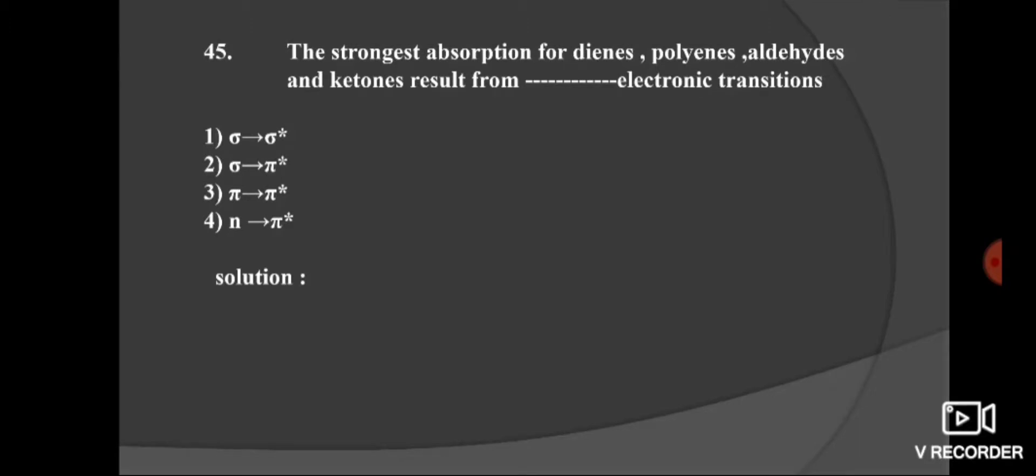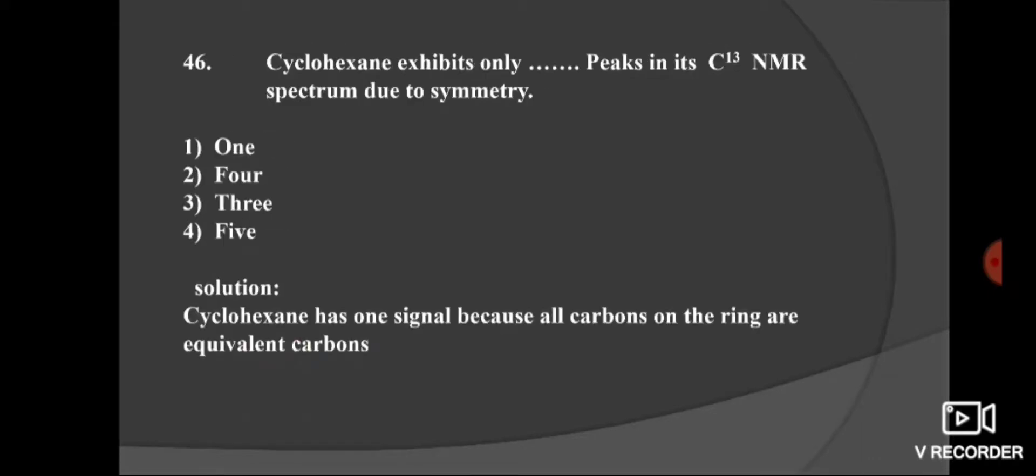Next question. The strongest absorption for dienes, polyenes, aldehydes and ketones result from electronic transition: option 1, sigma to sigma star; second, sigma to pi star; third, pi to pi star; and fourth, n to pi star. Here, strongest absorption results from pi to pi star electronic transition. Option 3 is the right option.